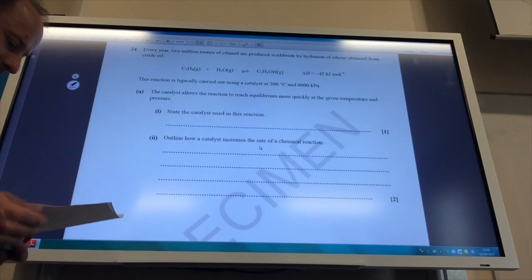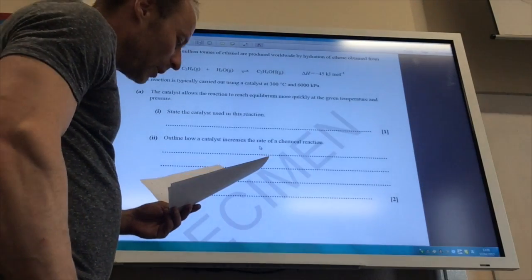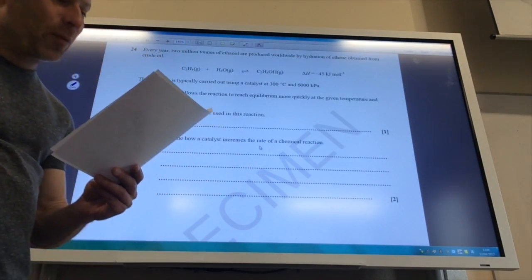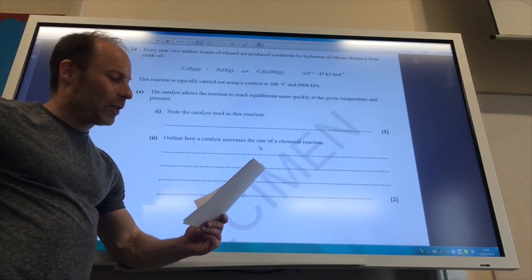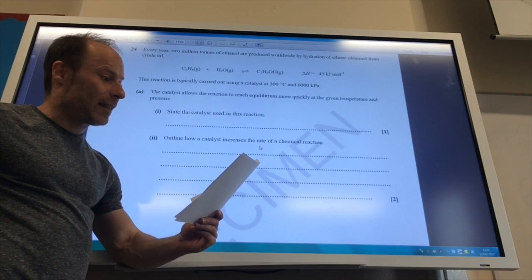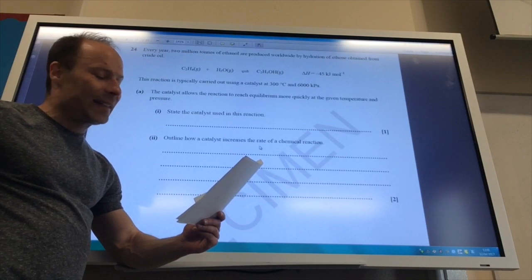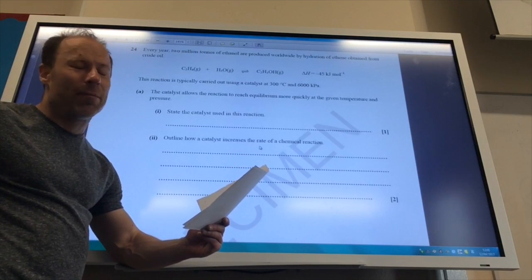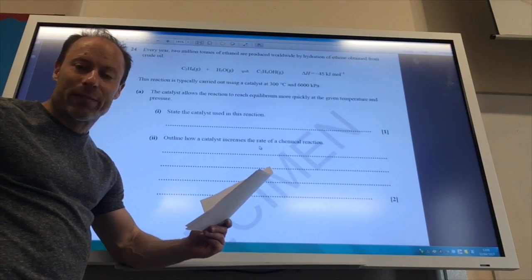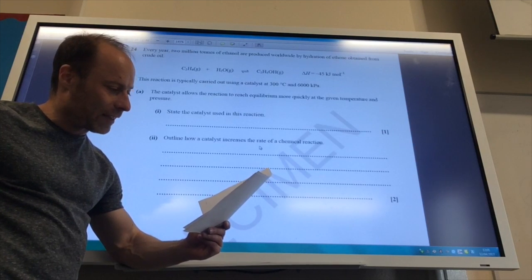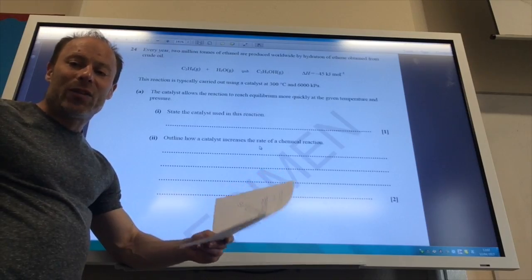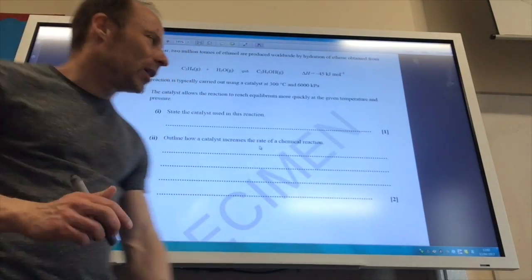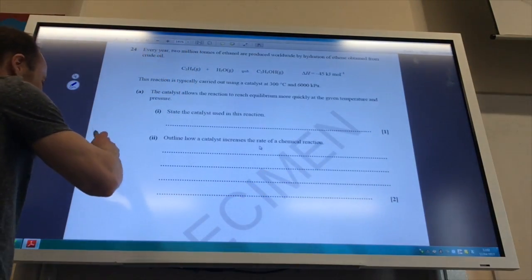Nearing the end then. Final question, you'll be delighted to hear. You've got ethene reacting with steam to produce ethanol. Carried out at 300 degrees C, 6000 kilopascals. The catalyst we use is usually phosphoric acid for that, H3PO4. How does a catalyst increase the rate of reaction?